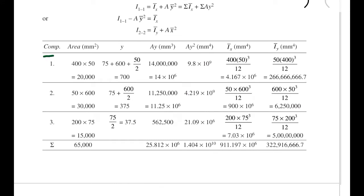We set up a table with columns for component, area in mm², y (centroidal distance), Ay (area times centroidal distance), Ay² in mm⁴, Ix in mm⁴ using the formula bd³/12, and Iy using the formula db³/12. These are the standard formulas for a rectangle.